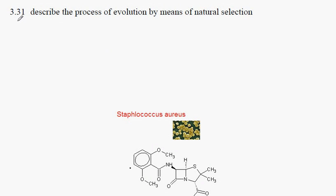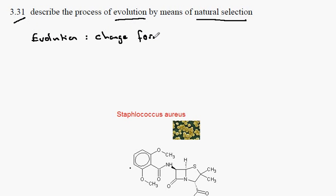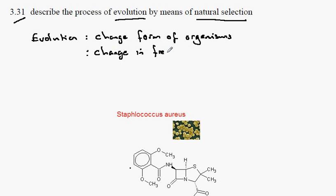GCSE Biology syllabus statement 331 — here we're describing the process of evolution by means of natural selection. Evolution we will define in a couple of different ways. The first is a change in the form of organisms, or new forms of organisms arising. The second, more technical definition is a change in the frequency of alleles.